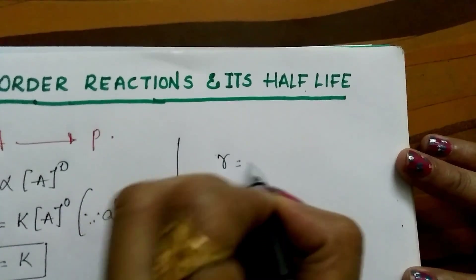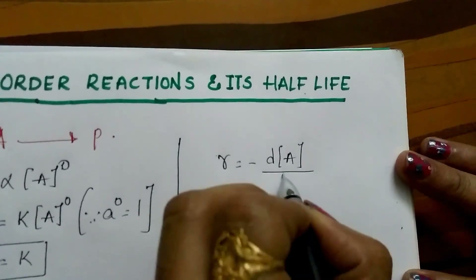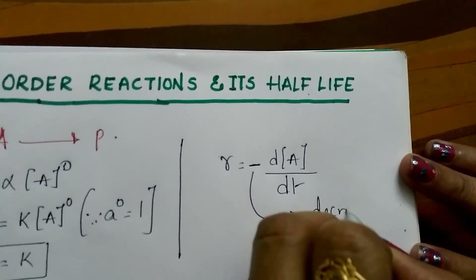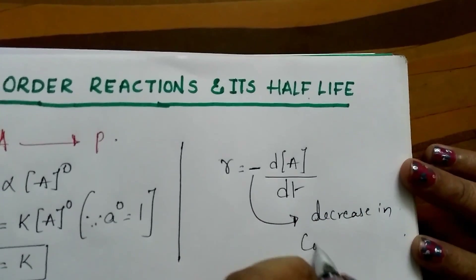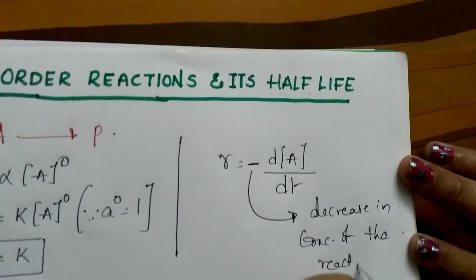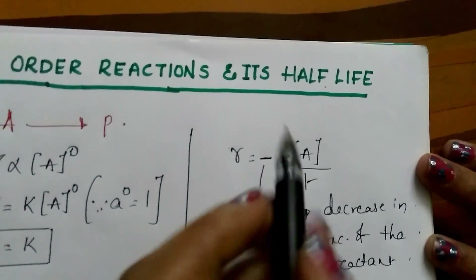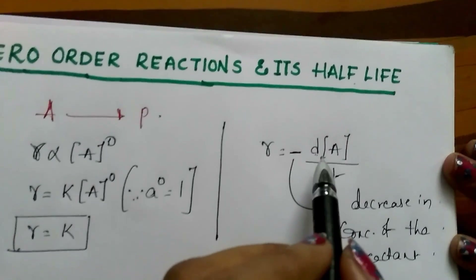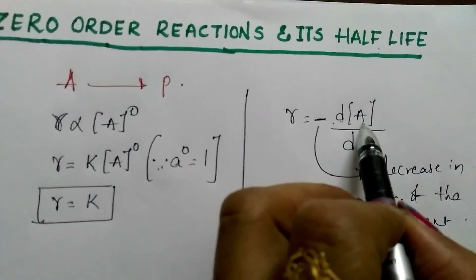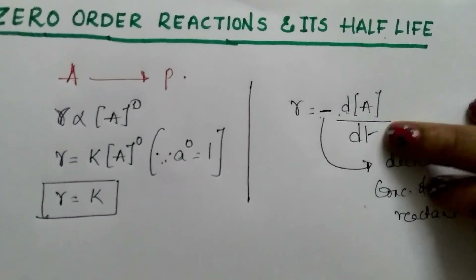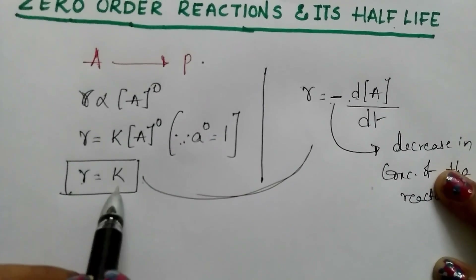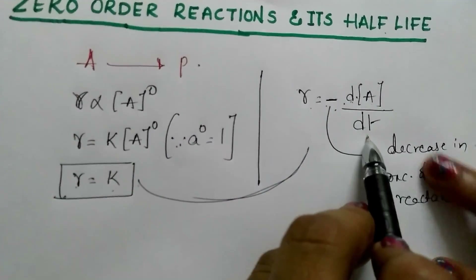We can write the rate for zero order reaction as minus d[A]/dt. The minus symbol indicates a decrease in concentration of the reactants, and d indicates the differential or instantaneous rate equation — meaning the decrease of concentration of reactants with respect to time T. Relating the two expressions: rate = K and rate = −d[A]/dt.